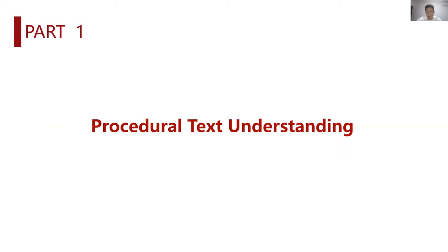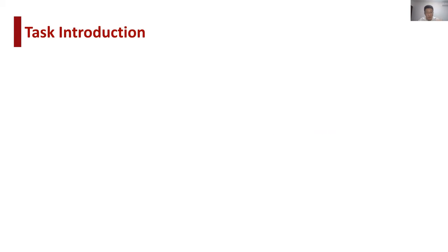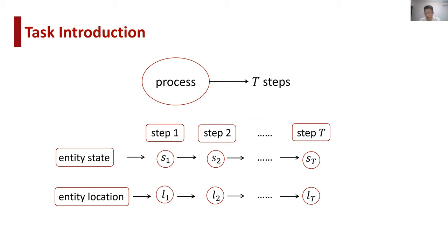First, let me introduce the task of procedural text understanding, a challenging branch of natural language processing. Procedural text describes step-by-step processes, which means a process will be composed of T steps. We have the entities involved in this process. Entities may undergo dynamic state transitions and location changes, which is the prediction target of this task.